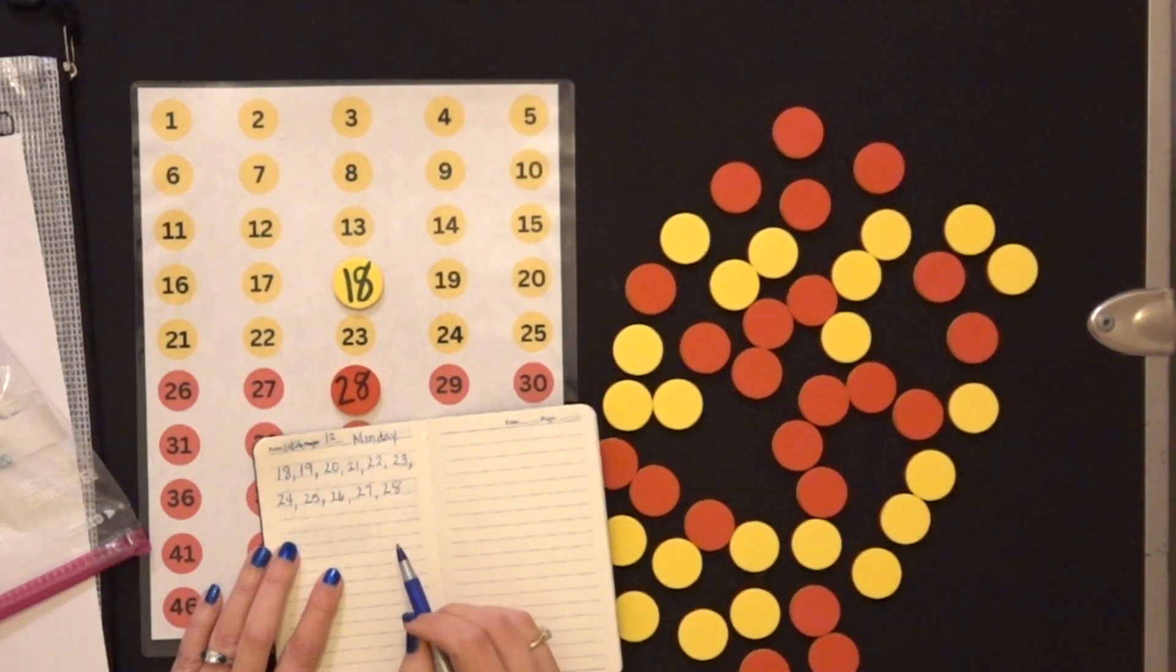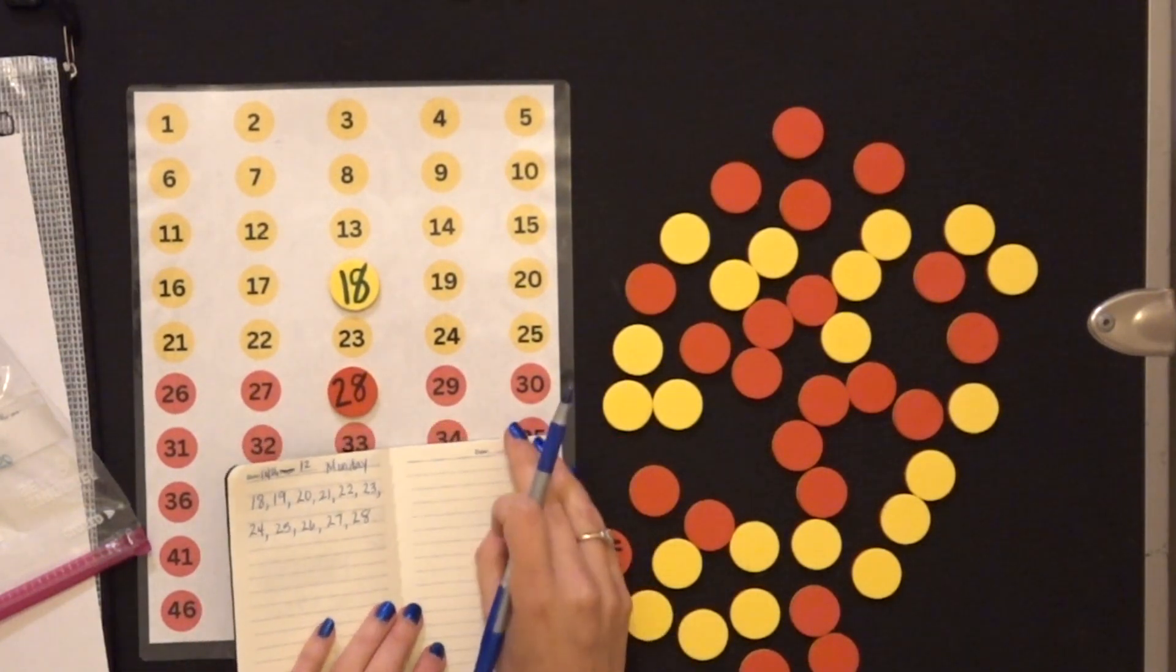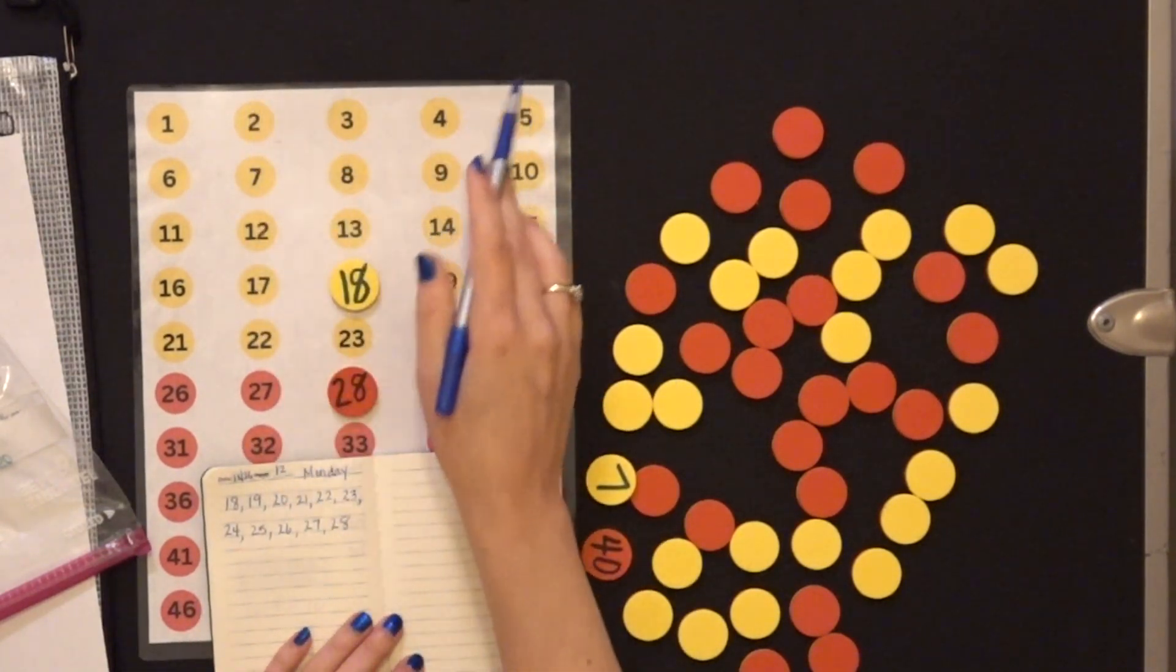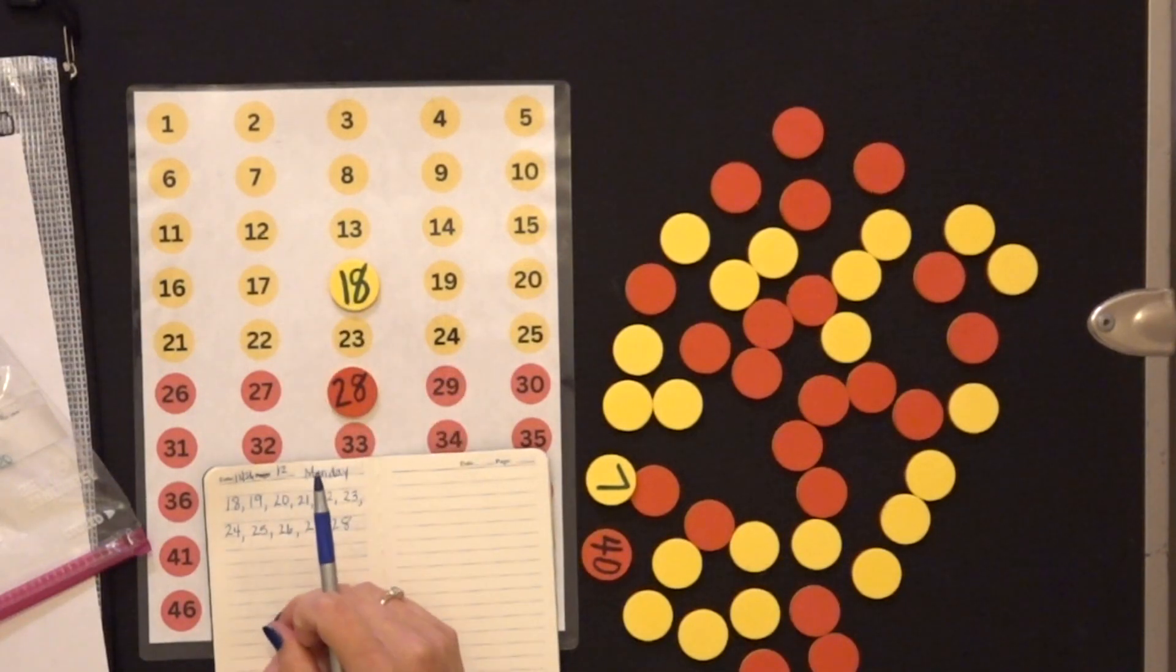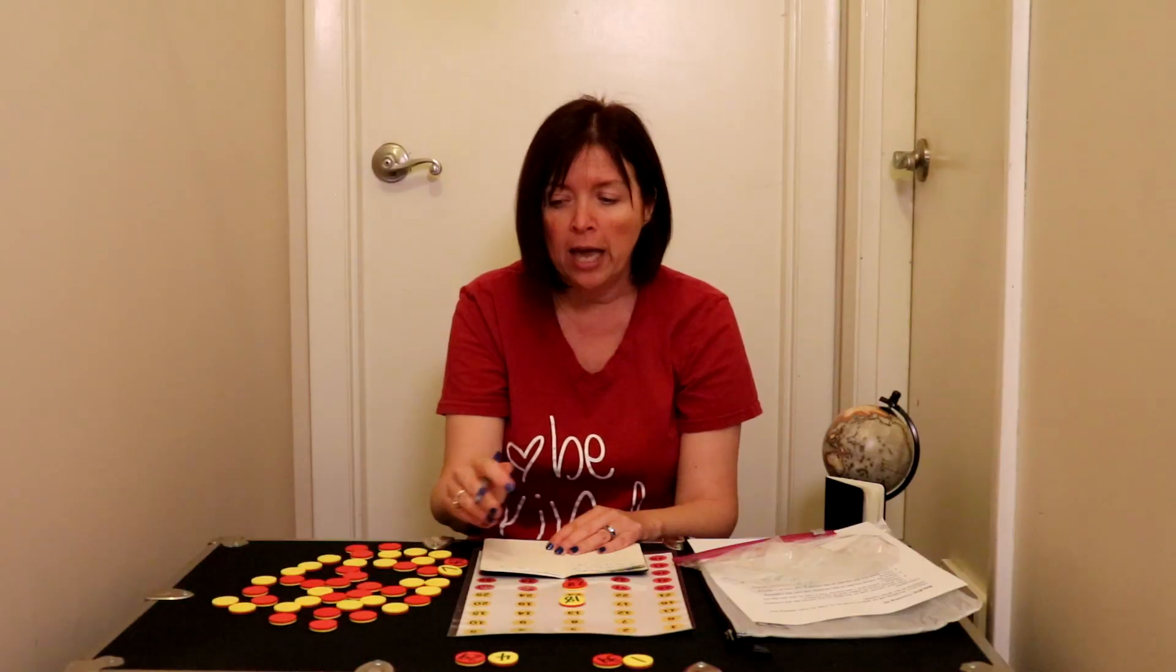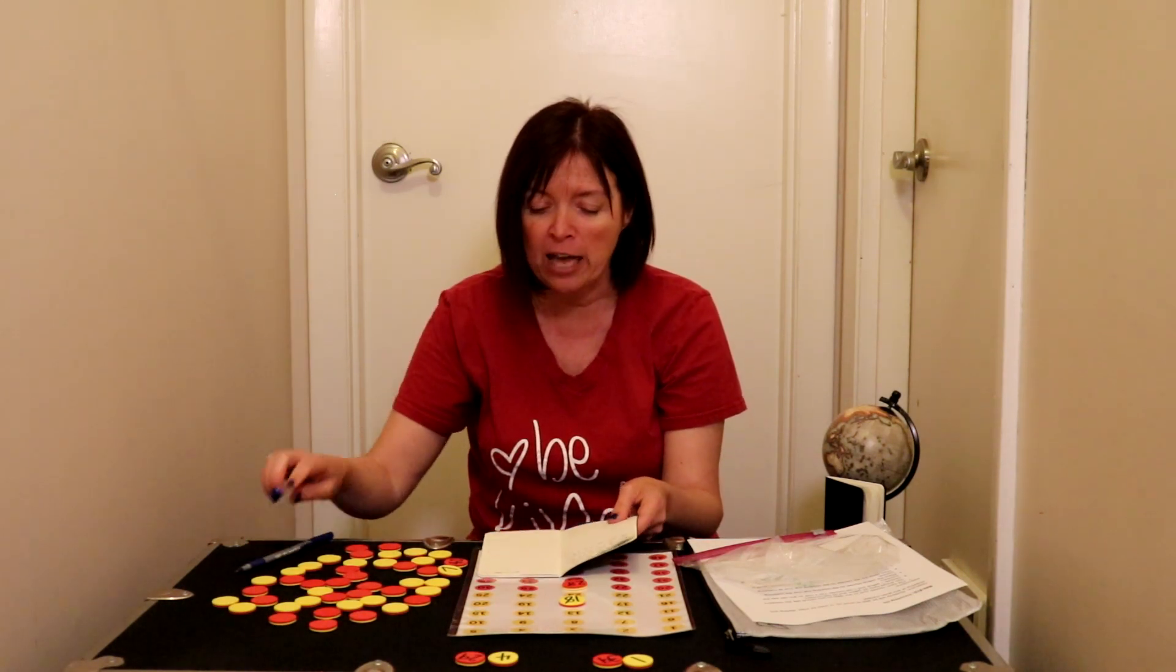And then on Tuesday, I'm going to do the same thing. We're going to play five times, you need to do five sets and record one. And then on Tuesday, you're going to do five sets and record one. And on Wednesday, you're going to do five sets and record one. And on Thursday, you're going to do five sets and record one.